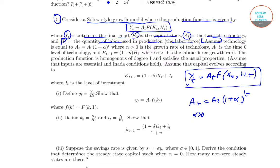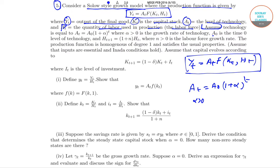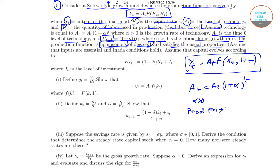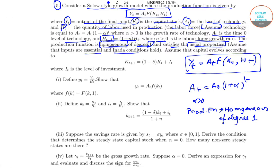Here α is greater than 0, and a0 is the time-0 level of technology. The labour force grows as ht+1 = (1 + n)·ht where n > 0. The production function is homogeneous of degree 1 and satisfies the usual properties. We assume inputs are essential and Inada conditions hold.